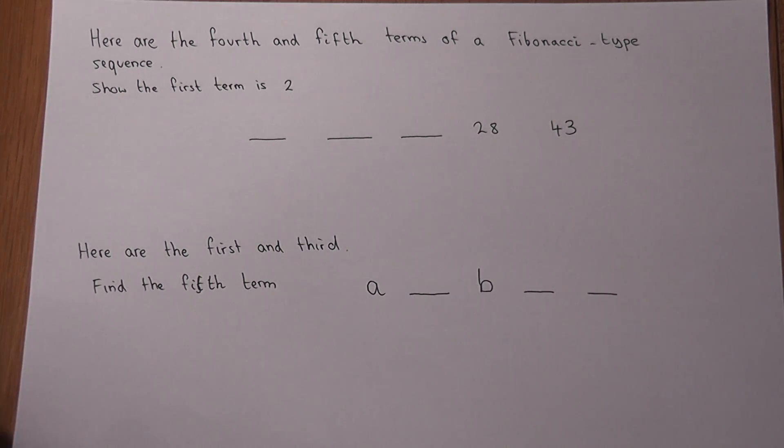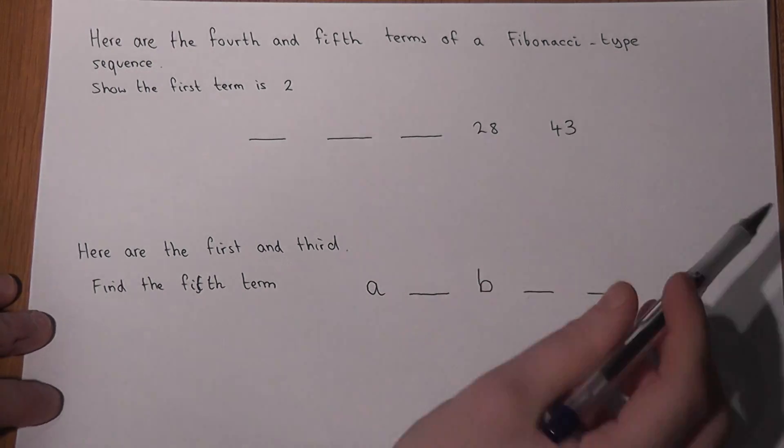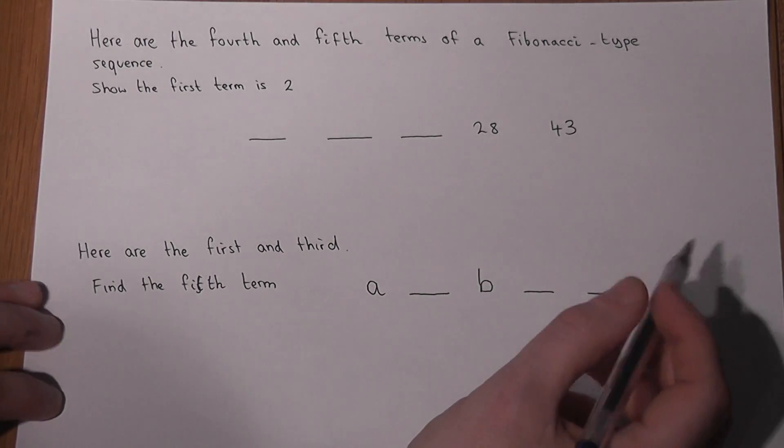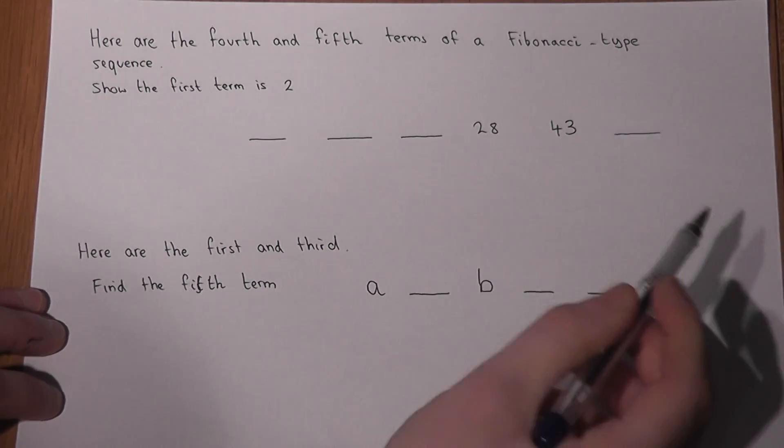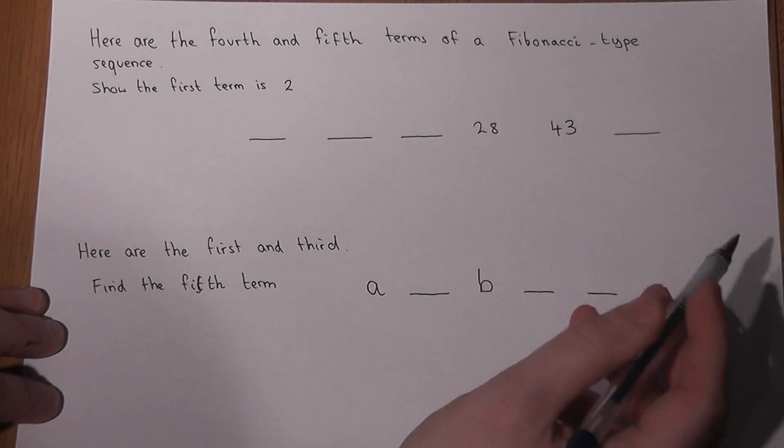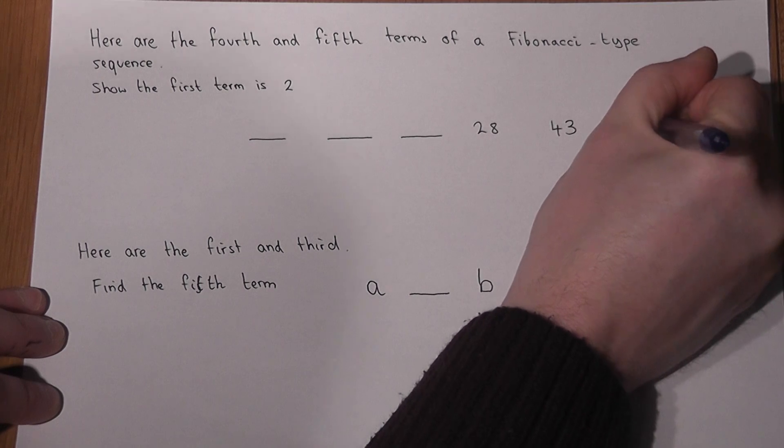So for example, in this case if we knew the fourth was 28 and the fifth was 43, then I could find the sixth term by doing 28 plus 43, which would equal 71.